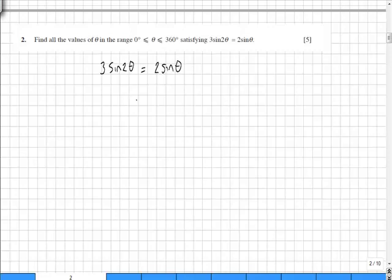Well, if we know our standard identities, we know that sine 2 theta is the same as 2 sine theta cos theta.